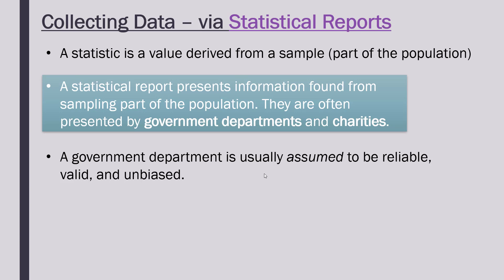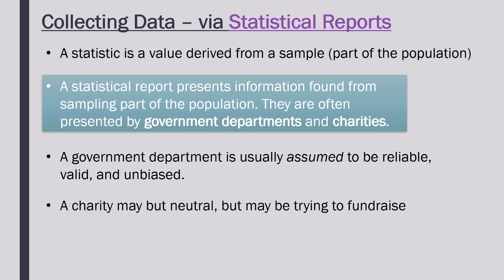They're meant to be quite trustworthy, valid, and unbiased — these three words being characteristics we'll look at in LO4. A charity is usually quite neutral and honest, but a charity's purpose is to fundraise and try to get more money. So sometimes a report from a charity might be leaving off other information and might be quite biased. We'd assume a government department wouldn't be, but that's not always the case.